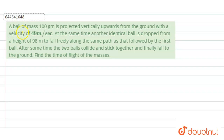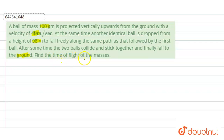The given problem states: a ball of mass 100 grams is projected vertically upward from the ground with an initial velocity of 49 m/s. At the same time, another identical ball is dropped from a height of 98 meters to fall freely along the same path as the first ball. After some time the two balls collide, stick together, and finally fall to the ground.